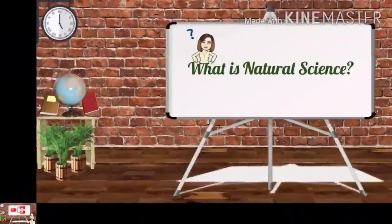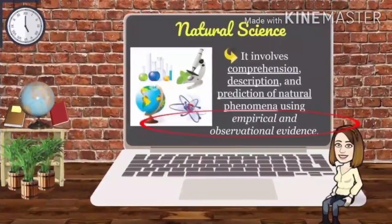What is Natural Science? It involves comprehension, description, and prediction of natural phenomena using empirical and observational evidence.